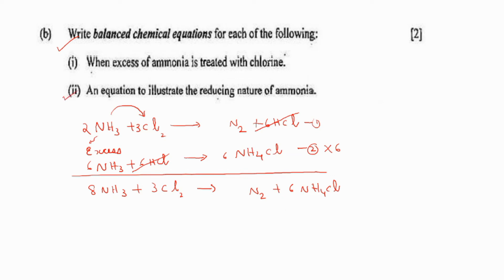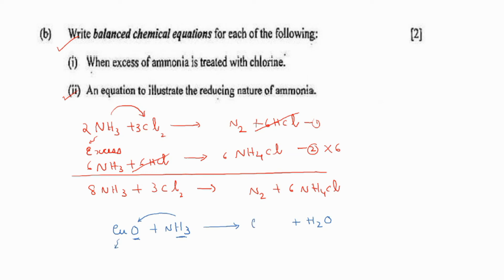Write an equation to illustrate the reducing nature of ammonia — a commonly asked question. You can write the reaction of ammonia with copper oxide. Ammonia is a reducing agent, so it will forcibly give hydrogen to copper oxide. Hydrogen and oxygen combine to form water. If oxygen goes with the hydrogen, what remains is copper. And from ammonia, nitrogen is remaining. These are the products of the reaction — easy to predict, no need to memorize.